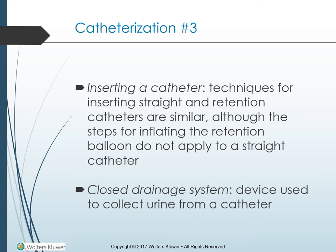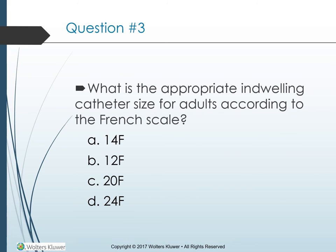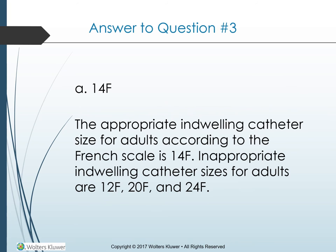Gerontologic considerations: indwelling catheters should be avoided if at all possible because older people have increased susceptibility to urinary tract infections; bladder training is much more desirable. If indwelling catheters are necessary, meticulous daily care is required and tubing should never be placed higher than the bladder. Question — what is the appropriate indwelling catheter size for adults according to the French scale? A. 14 French, B. 12 French, C. 20 French, D. 24 French. Answer: A — 14 French. The closed drainage system components consist of a calibrated bag, tubing of sufficient length, and a hanger.